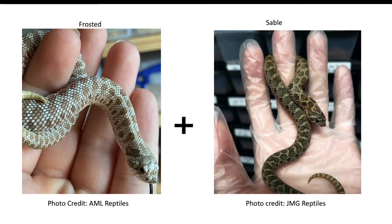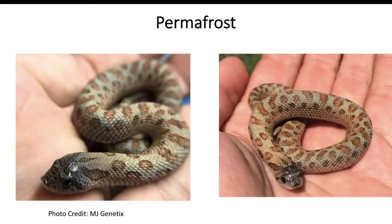Let's take it a step further using the frosted morph again — caramel hypo — and combine it with the sable. When you combine these three recessive genes you get what's called a permafrost, a very pretty hognose snake. I actually saw this one in person at the Daytona Reptile Expo; the breeder Mitch Davey from Fathom Hogs had a baby permafrost on display.